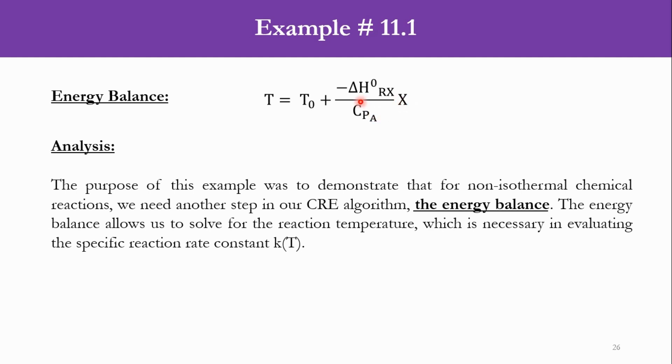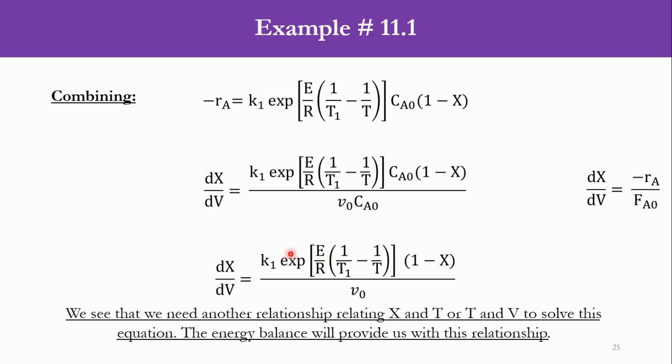Once we substitute the value of T in the previous equation, T varies with X. The reference temperature T0 remains constant, ΔH°rx and Cp remain constant. As X changes, T changes. With this variation in T, k changes, and accordingly we get different values of k at different temperatures.